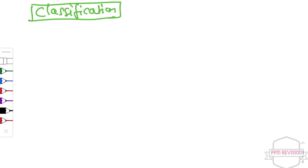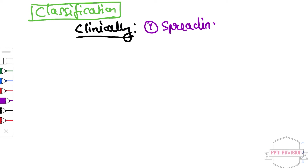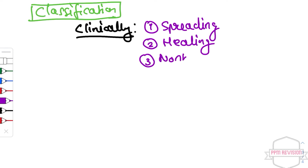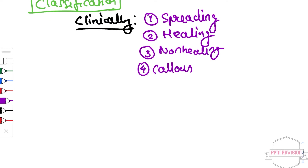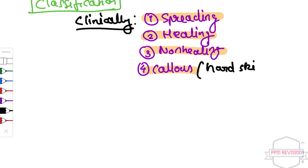Moving to classification — clinically, ulcers can be classified as: spreading, healing, non-healing, and callous. These are the four headings under clinical classification. Callous means insensitive or hard-skinned, and in other terms it is a chronic non-healing ulcer.